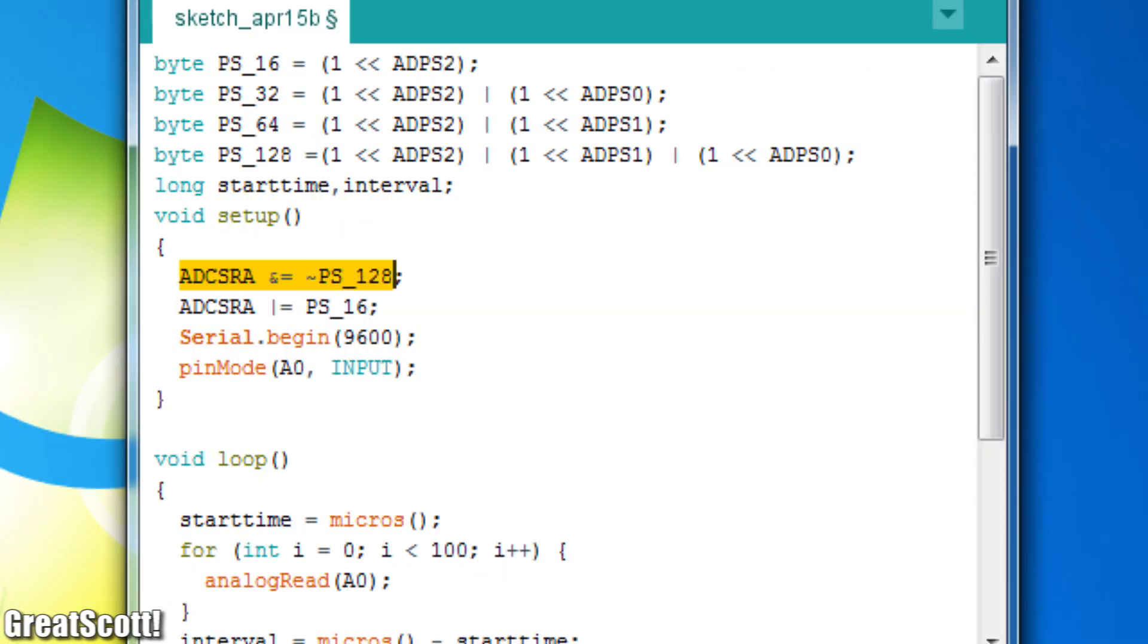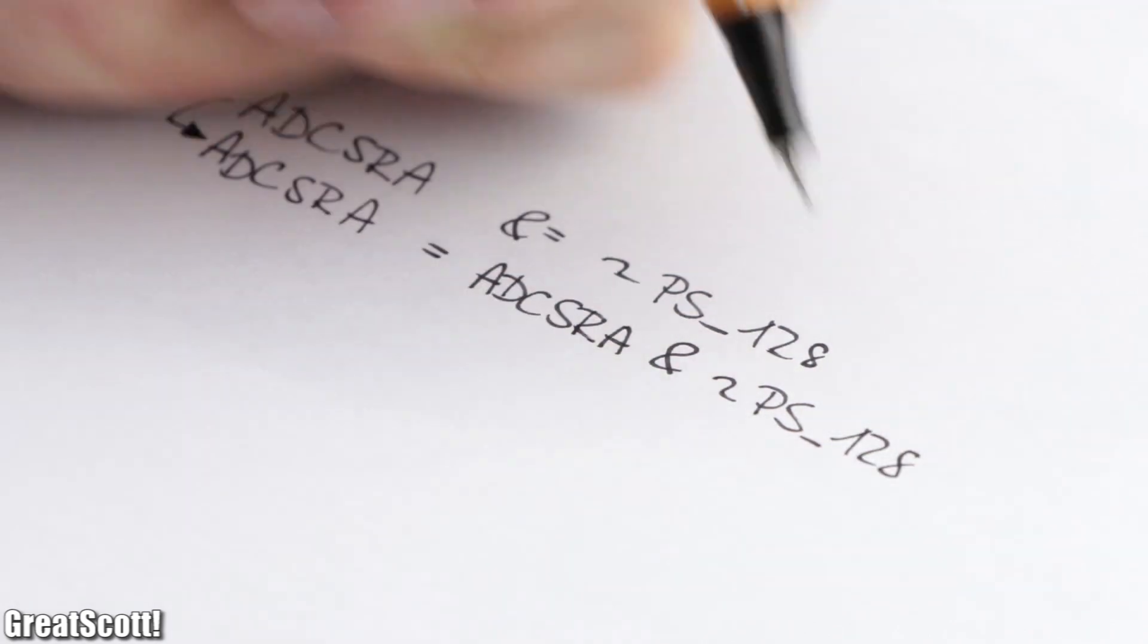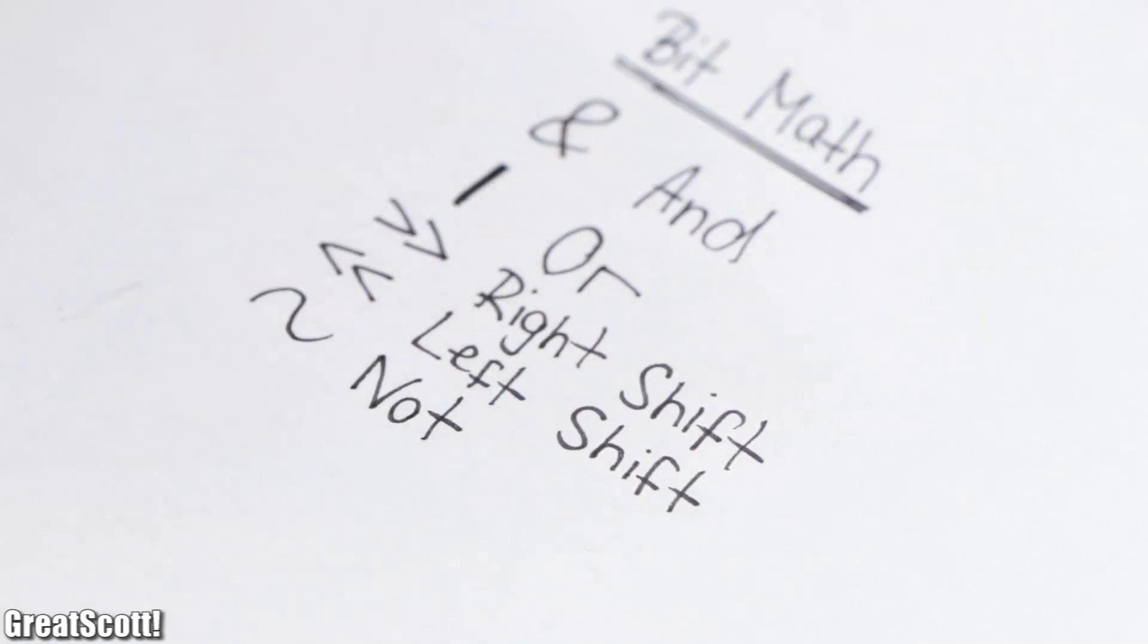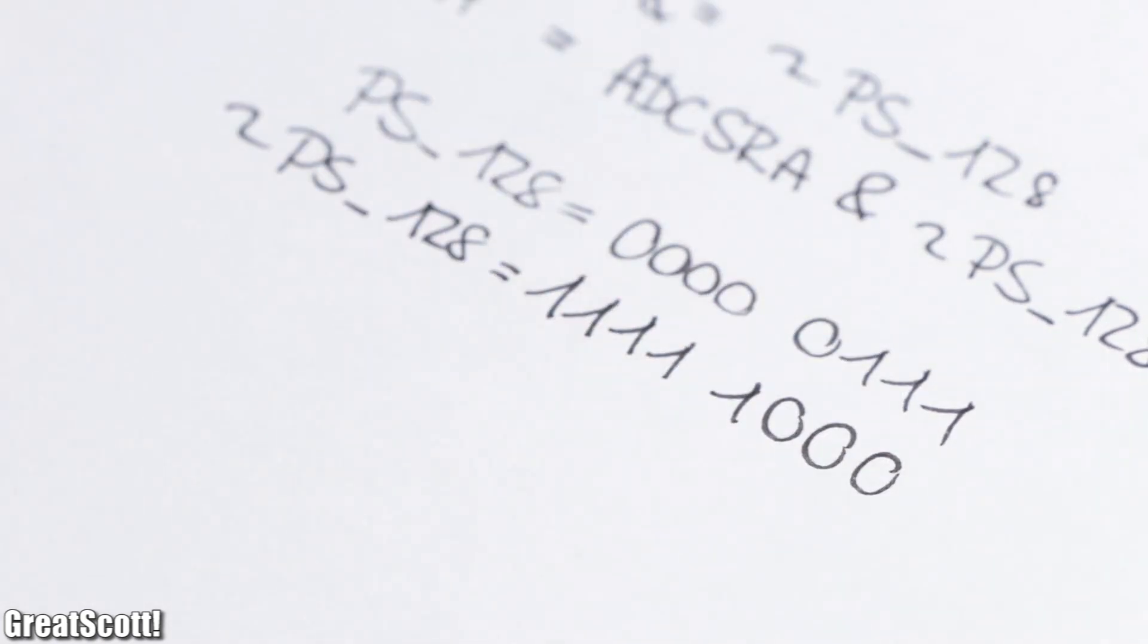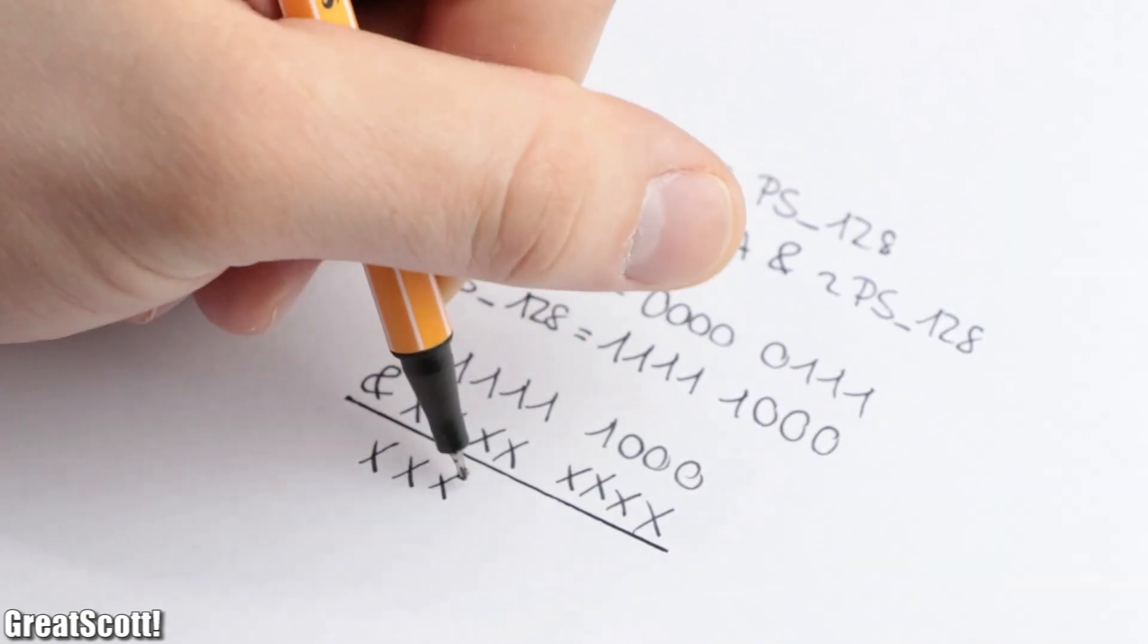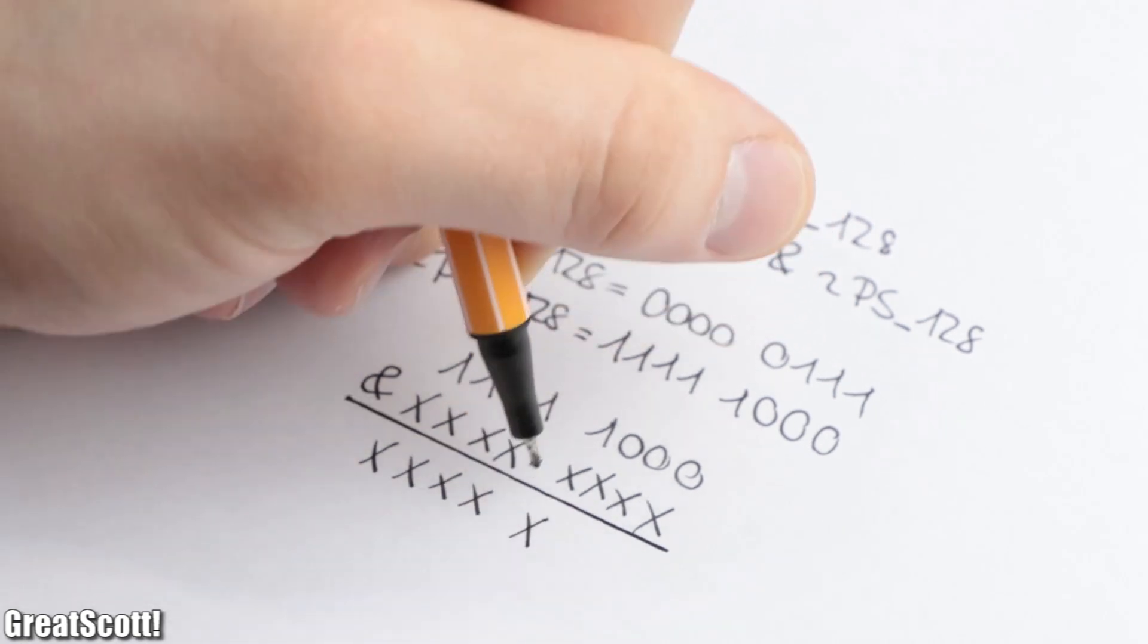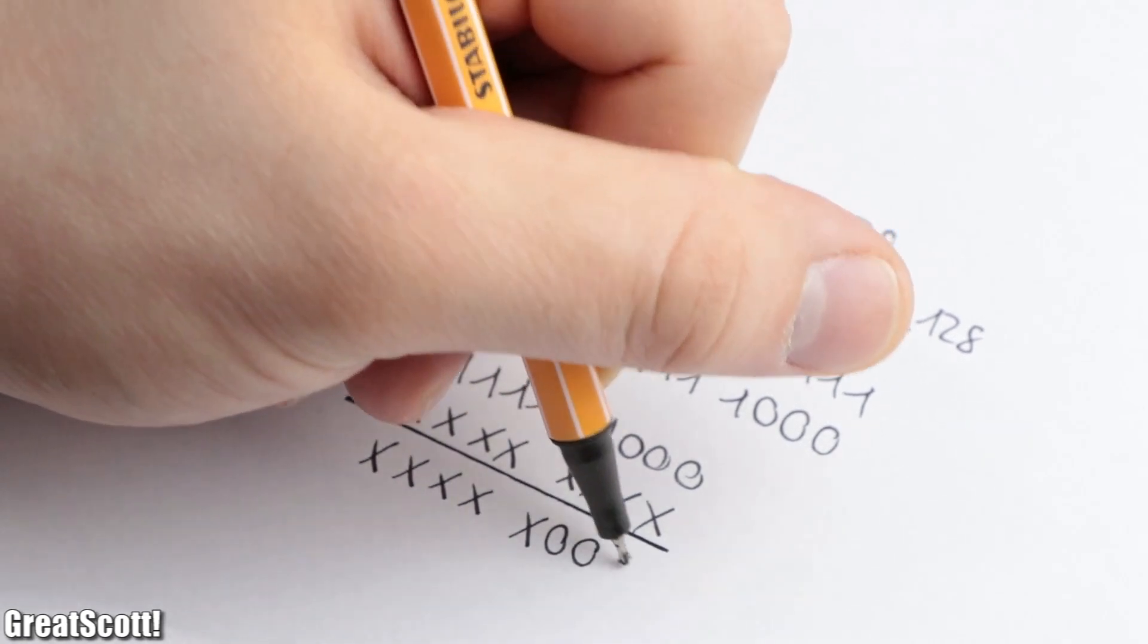Next we got this line, which is basically an abbreviation. And the tilde line is used to flip all the bits of the PS128 around and thus ultimately not mess with the bits 3 to 7, but write a 0 to all the prescaler bits.